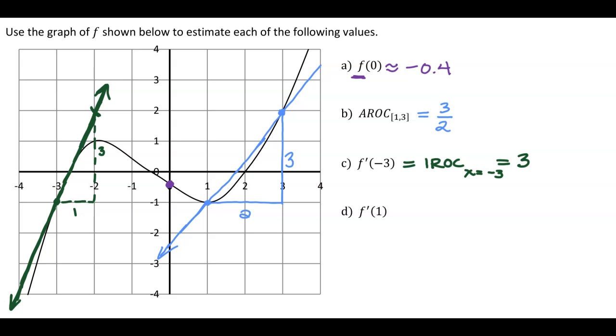As soon as you see f prime, that should mean instantaneous rate of change. It should mean slope of tangent line. It should at least inspire the idea that maybe it's velocity. That will only be true if your f is a position function, but often the derivative is related to velocity.